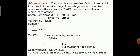The complement system: these are plasma proteins with a role in immunity and inflammation. They ultimately generate a pore-like membrane attack complex, called MAC, that punches holes in the membrane of microbes. The complement system is C1 to C9; C3 is the most important. Mainly these are in inactive forms. When they come in contact with immunoglobulins IgG and IgM complex, C1 is converted into activated C1. C4 plus C2 bind in the classical pathway, and C4B2A acts upon C3 to convert it into activated C3.